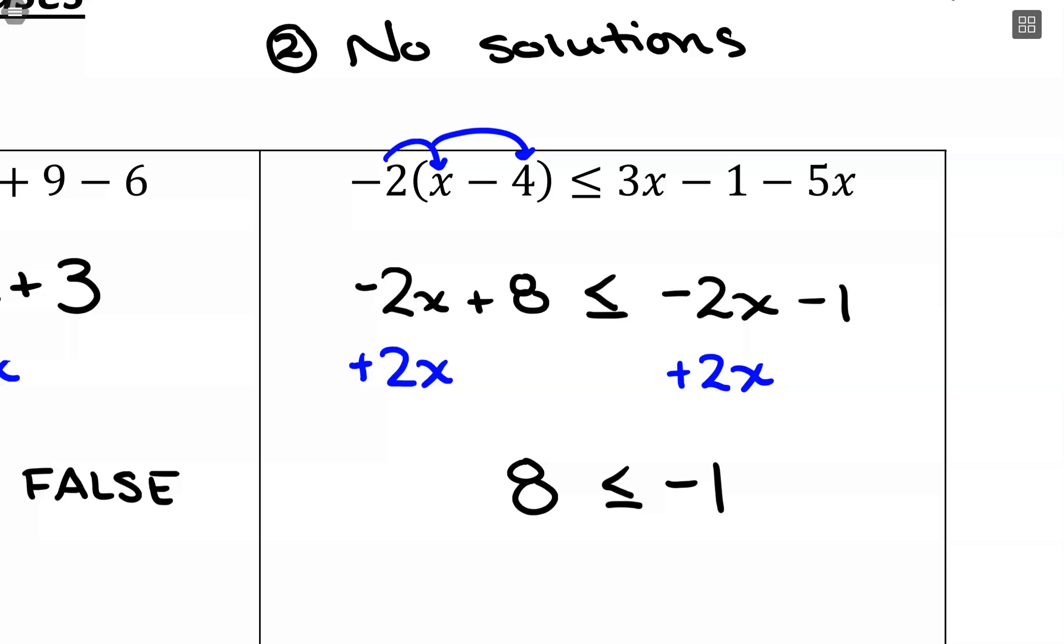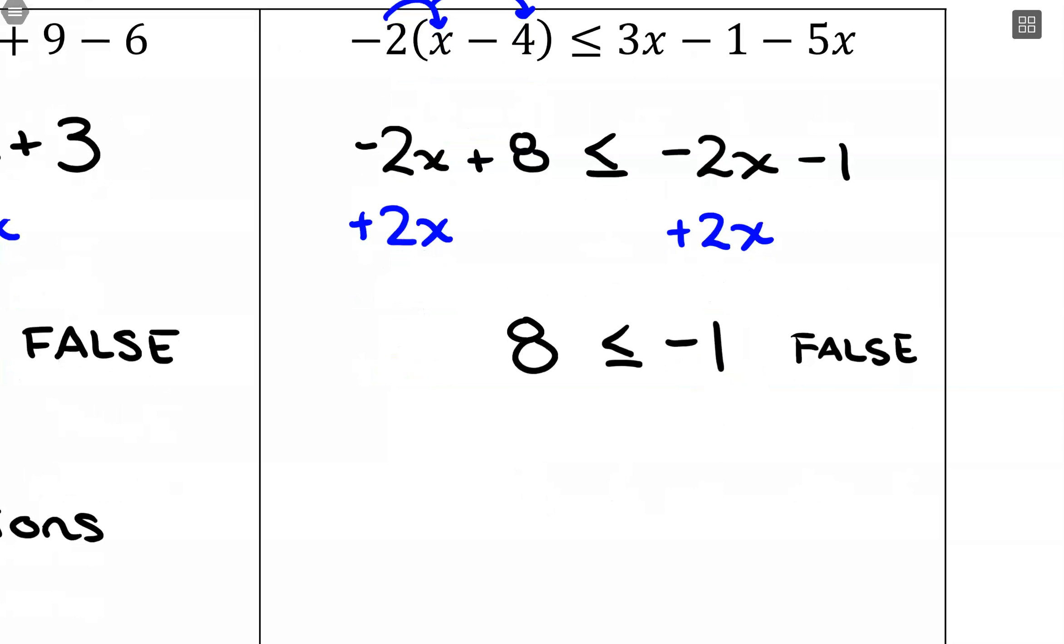Now with this, I need to be extra careful of making sure I get the correct direction of things in terms of whether this is true or false. So this is saying 8 is smaller than or even less than or equal to negative 1. And that is false. 8 is larger than negative 1. So this is giving me a false statement, which means there are no solutions.